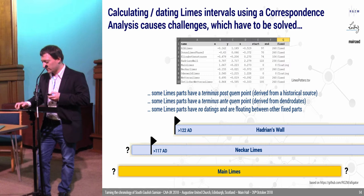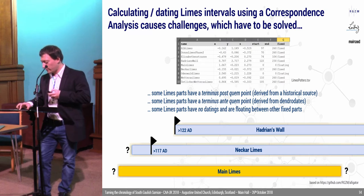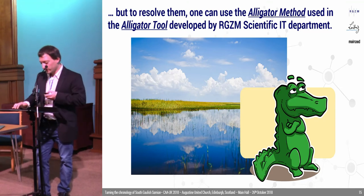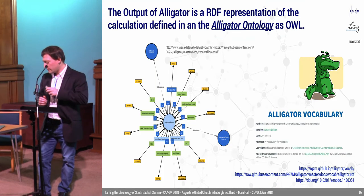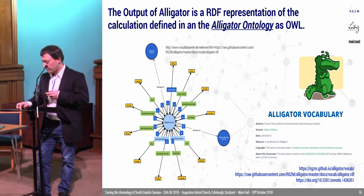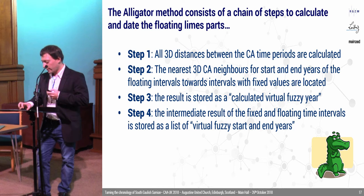If we want to calculate or date the limes intervals using a CA, this causes some challenges which have to be solved. For example, some limes parts have a terminus post quem, maybe derived from a historical source. Some have a terminus ante quem derived from dendrochronology dates. And some limes parts have no datings and are floating between all the other fixed parts. To resolve them, you can use the Alligator method — a tool we developed at the RGZM in the scientific IT department. The output of the Alligator will be an RDF representation of all the calculations, defined in the so-called Alligator ontology.